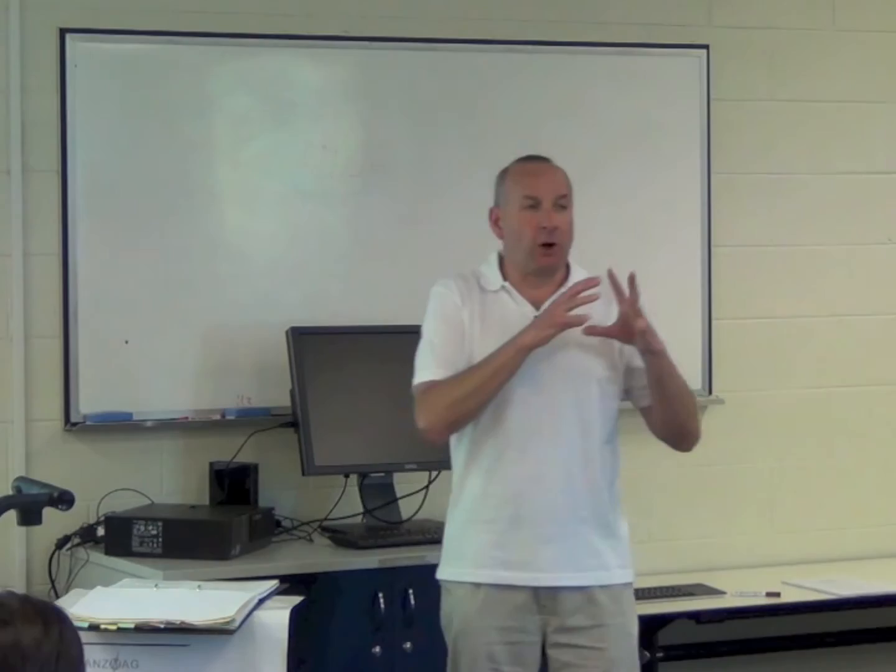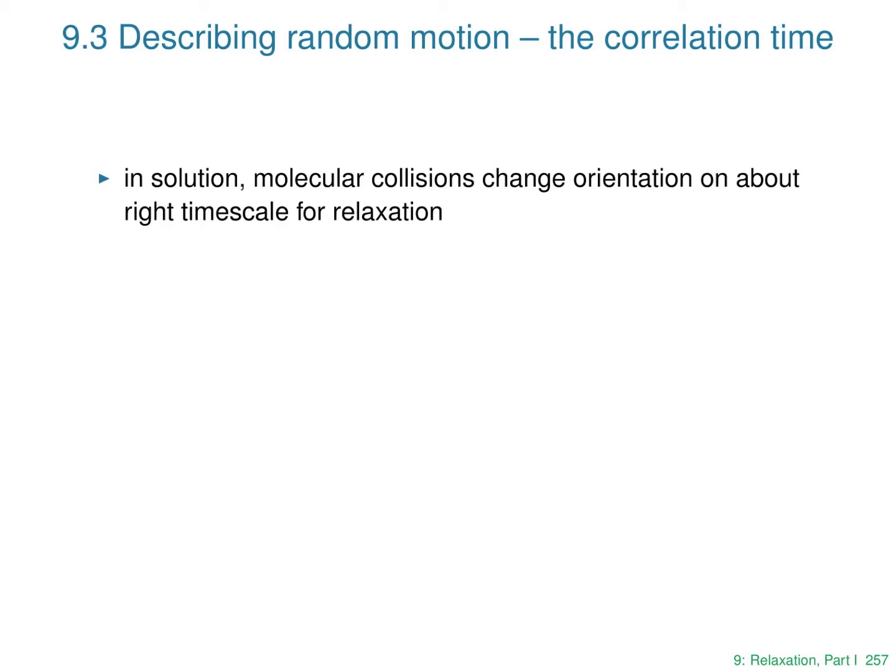So we've got some random fields in the molecule and they are going to drive our system back to equilibrium. These random fields vary with time in a very complicated way because we're dealing with a very large number of molecules undergoing thermal motion. Our next task is to describe this random motion which drives the relaxation, and this is where the concept of the correlation time comes in.